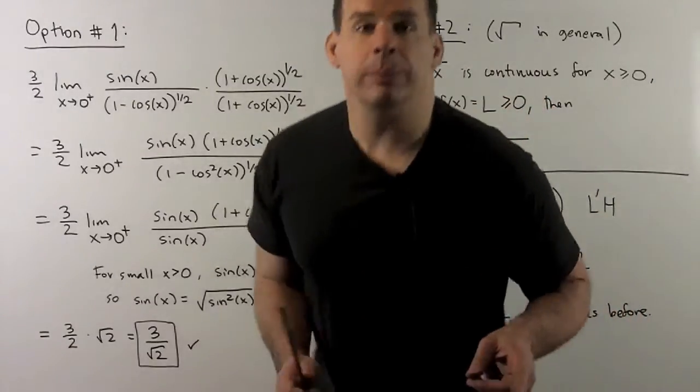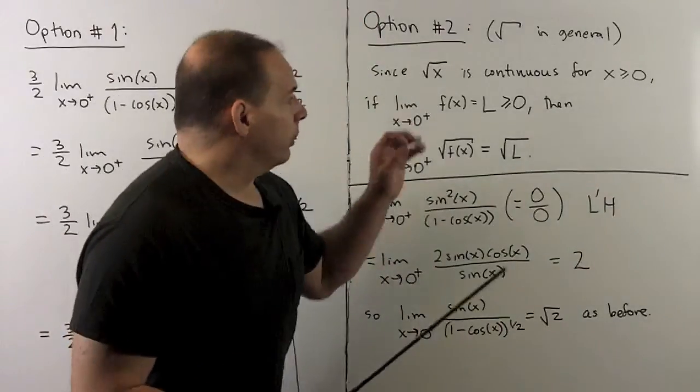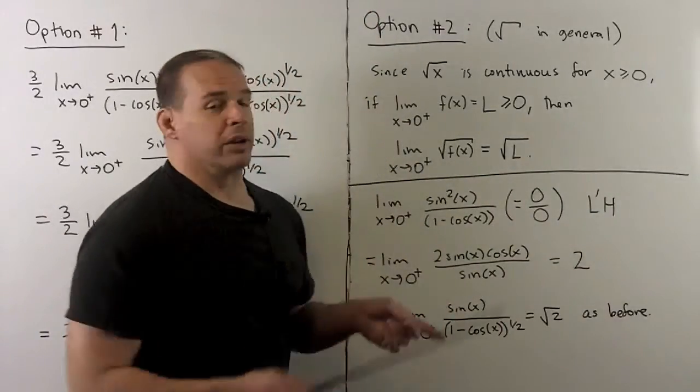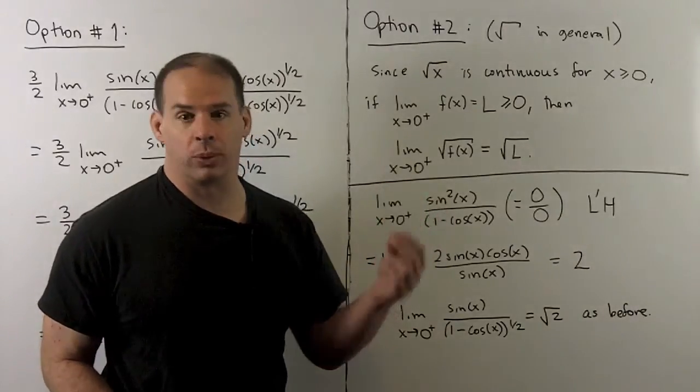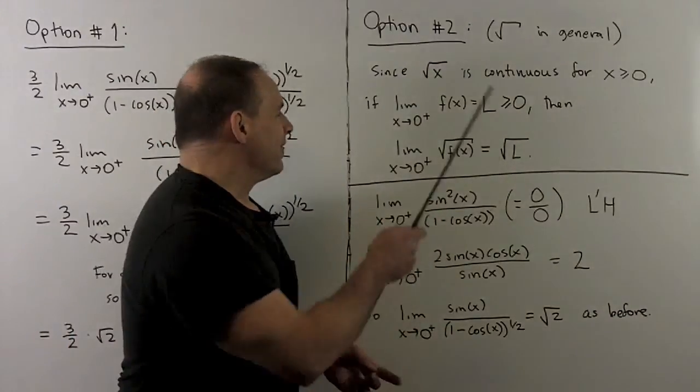For option two, note we have that square root of x is a continuous function on its domain, for x greater than or equal to zero.